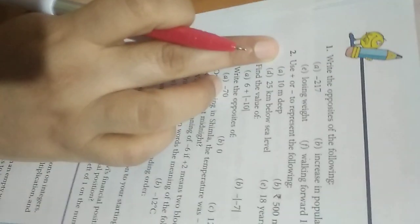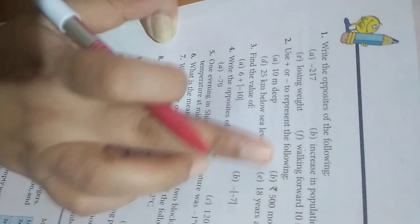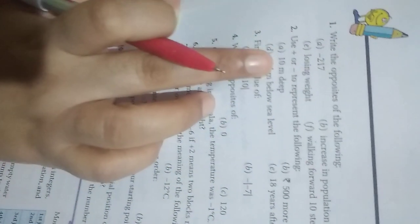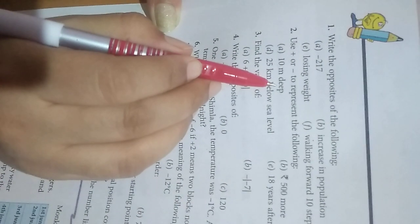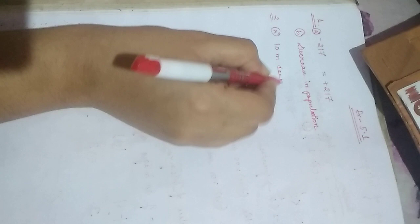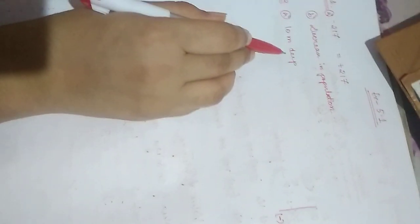Now let us go to number 2: use plus or minus to represent the following. These items are given and you have to represent them with plus or minus. The first is '10 meter deep.' What is the meaning of this? '10 meter deep' means the water is 10 meters deep.